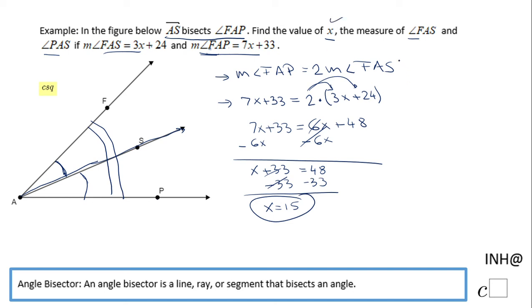Now we move to the next part where we need to find the measure of angle FAS. This is 3x + 24. We replace x with 15: 3 times 15 is 45, plus 24, which equals 69 degrees. That is the measure of angle FAS.